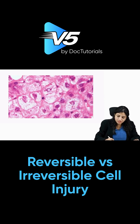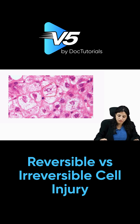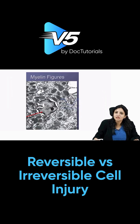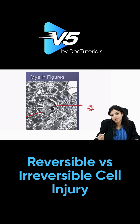The cells have become distended and appear very clear — this is what is called hydropic change, because of more water coming into the cell. This is the electron microscopy of a myelin figure. Myelin figures are nothing but phospholipid whorls — they appear as if somebody has cut a tree, showing these phospholipid whorls.